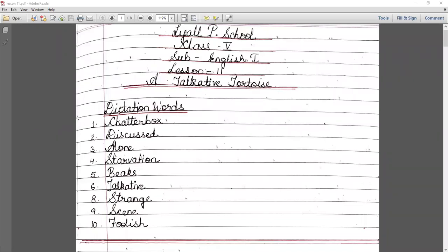Let's start. First is your dictation word. First, chatterbox: C-H-A-T-T-E-R-B-O-X. Second, discussed: D-I-S-C-U-S-S-E-D. Number third, alone: A-L-O-N-E. Number fourth, starvation.